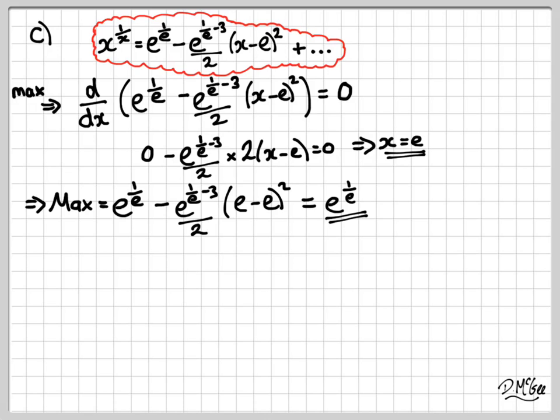And you should see that will give us that a maximum value of our series expansion will occur and give us e to the power of 1 over e minus e to the power of 1 over e minus 3 all over 2 times by e minus e squared. The e minus e will cancel out to give us a 0, so we'll be left with e to the power of 1 over e.